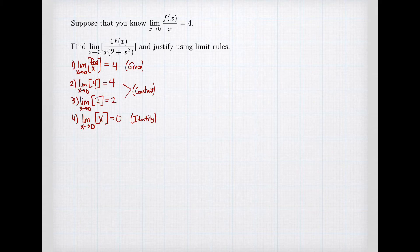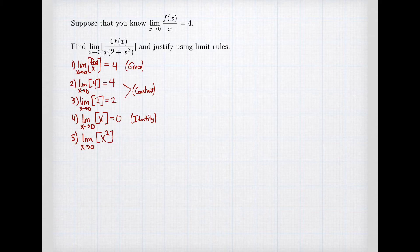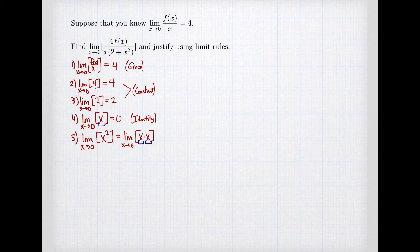Now we use the limit rules to construct more complicated formulas. In our denominator we had 2+x², so we need to find the limit of x² first. Since x² means x times x, the limit of x² as x goes to 0 equals the limit of x times x, which by the product rule is 0 times 0 = 0. So the limit of x² is 0, and this is justified by the limit of a product.